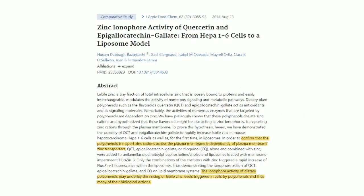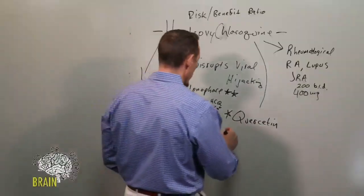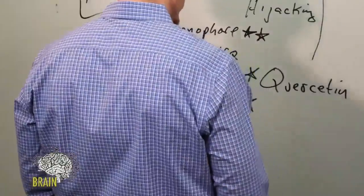What are those polyphenols? I've talked about these already in a number of shows. Quercetin is one of them that improves zinc concentration in the cell, and then we also have epigallocatechin gallate.